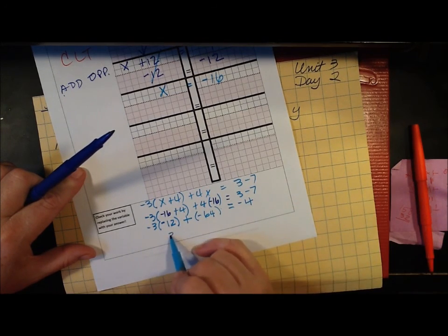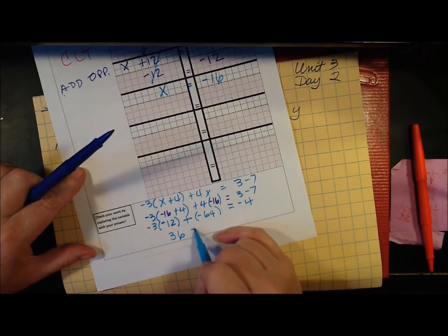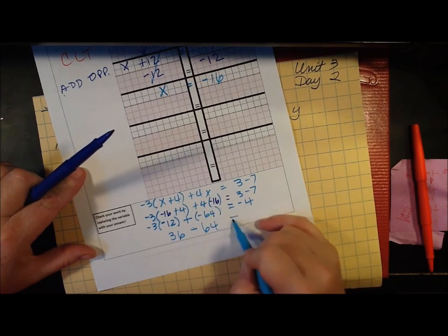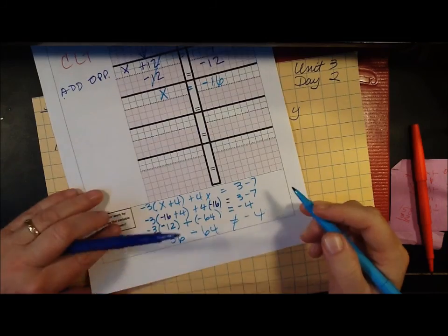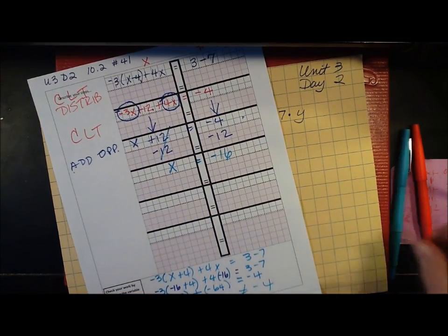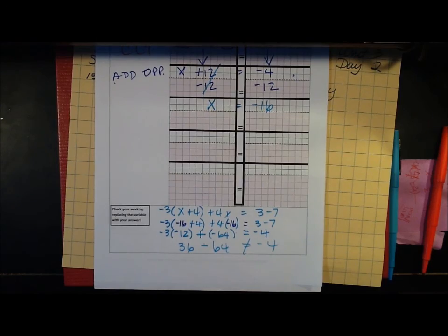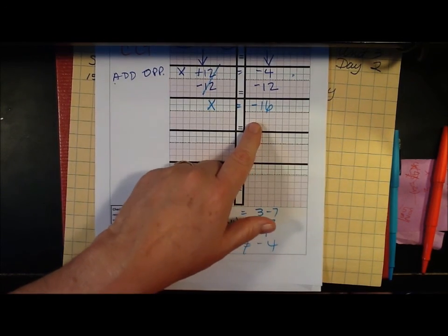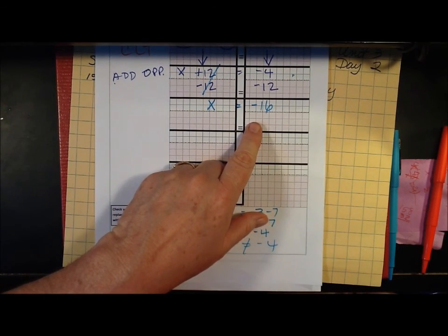So this is positive 36 and this is negative 64 and that does not equal negative 4 by any stretch of the imagination. So I just went and looked at the answer in the book and I was right. It is negative 16 which means something's wrong.